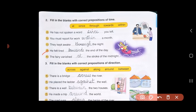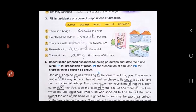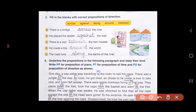He placed the ladder against the wall. C. There is a wall between the two houses. He made a trip around the world. The road runs along the banks of the river.